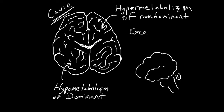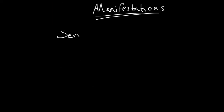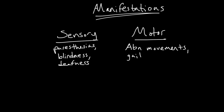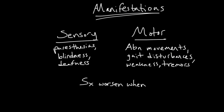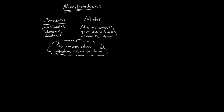Symptoms are thought to be due to excessive cortical arousal set off by negative feedback loops between the cerebral cortex and brainstem reticular formation. Sensory symptoms seen in this disorder include anesthesia and paresthesia to extremities. Deafness, blindness, and tunnel vision may also be seen. Motor symptoms include abnormal movements, gait disturbance, weakness, paralysis, gross rhythmic tremors, chloroform movements, tics, and jerks. Symptoms often worsen when attention is called to them.